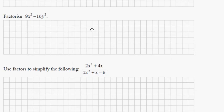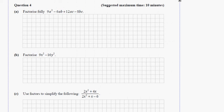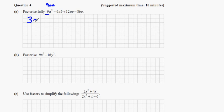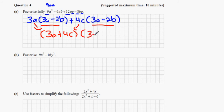Question 4 — factorizing. We take out a factor of 3 and a from 9a² − 6ab, giving 3a(3a − 2b). Then from 12ac − 8bc we take out 4c, giving 4c(3a − 2b). Both brackets are the same, so it factorizes into (3a + 4c)(3a − 2b).